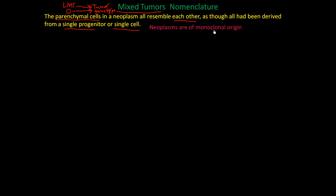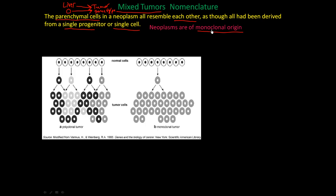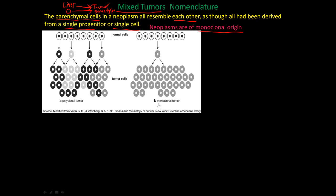Neoplasms are of monoclonal origin, and studies have confirmed this is true most of the time. In the monoclonal model, one cell becomes mutated and gives rise to all the tumor cells, which all look like the original cell type — not a mix of skin, gut, kidney, or heart cells. They all look like the same original cell type. This is called monoclonal origin.